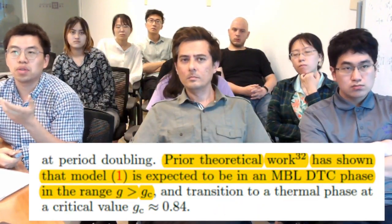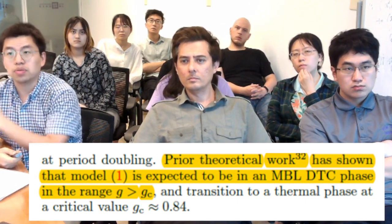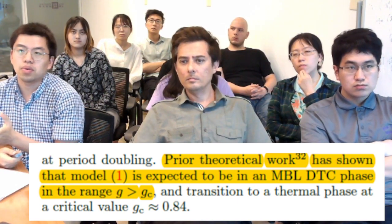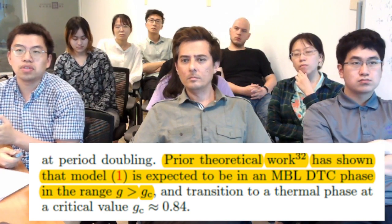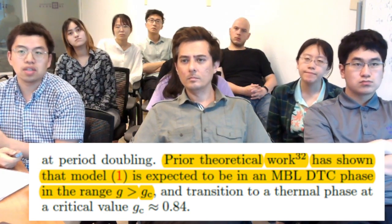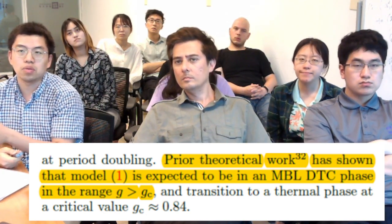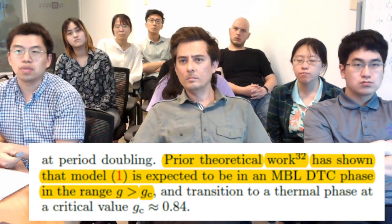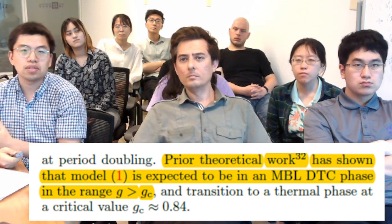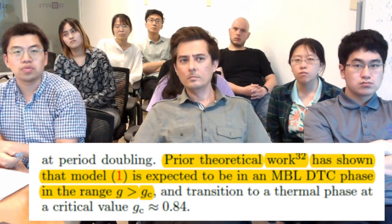Prior theoretical works have shown the model is expected to have this kind of discrete time crystal phase in the range where g is bigger than g_c, where g_c equals approximately to 0.84. So this is the phase transition between these two phases.